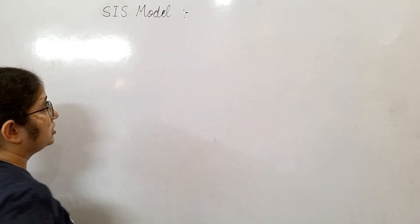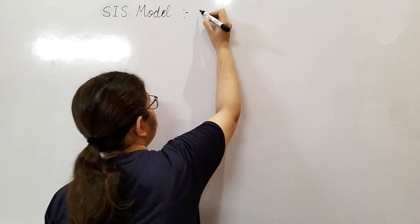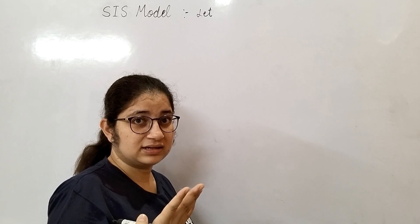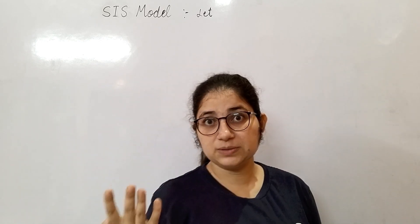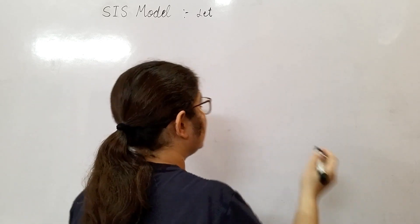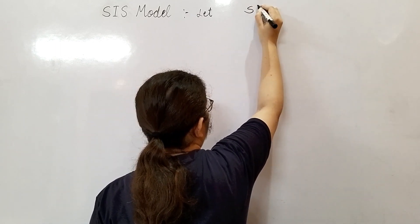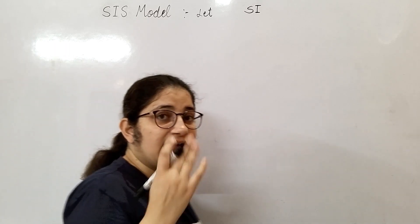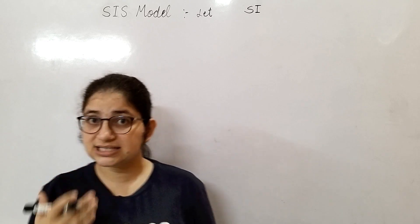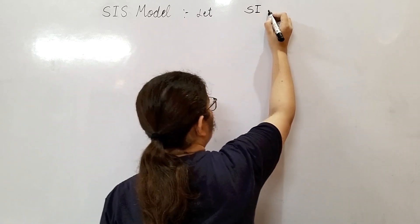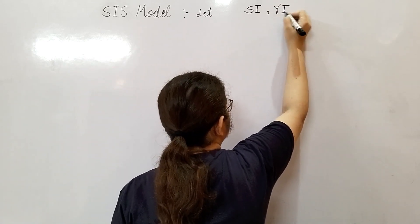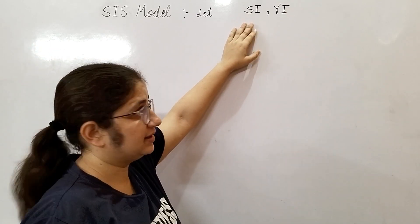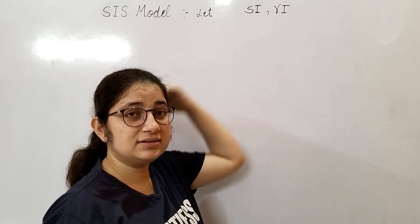In this model, susceptible persons become infected at a rate proportional to SI, and infected persons again become susceptible at a rate proportional to gamma I. At this rate persons are getting infected, and at this rate persons are becoming susceptible again.